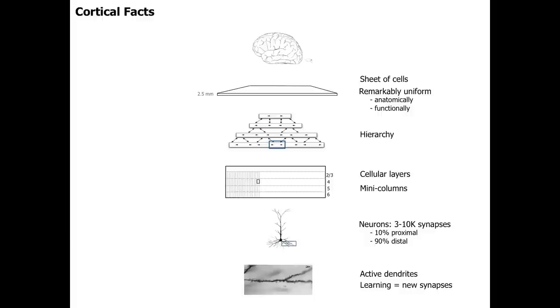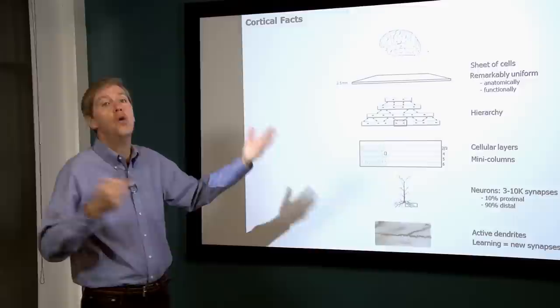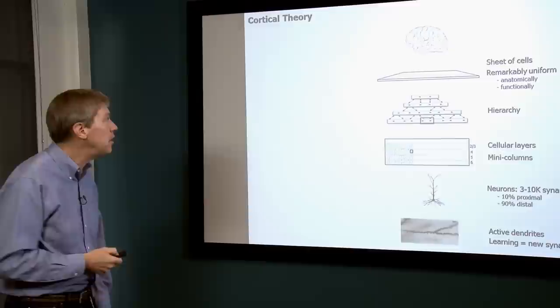Everything you do — everything a human has ever done in their life — operates in this structure. This is what intelligent structures in biology look like. If we can understand how all these components work, we understand how the neocortex works.